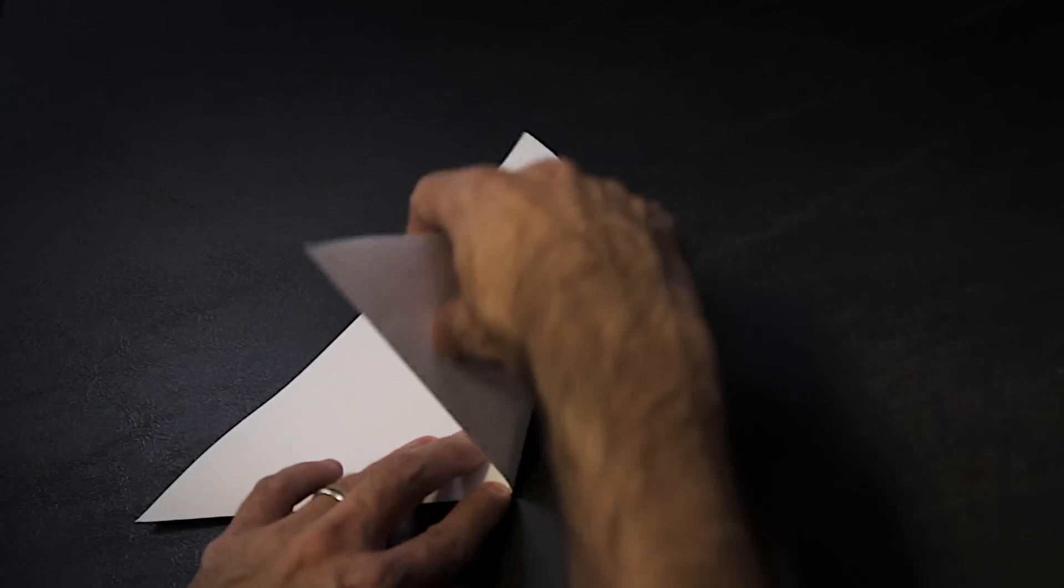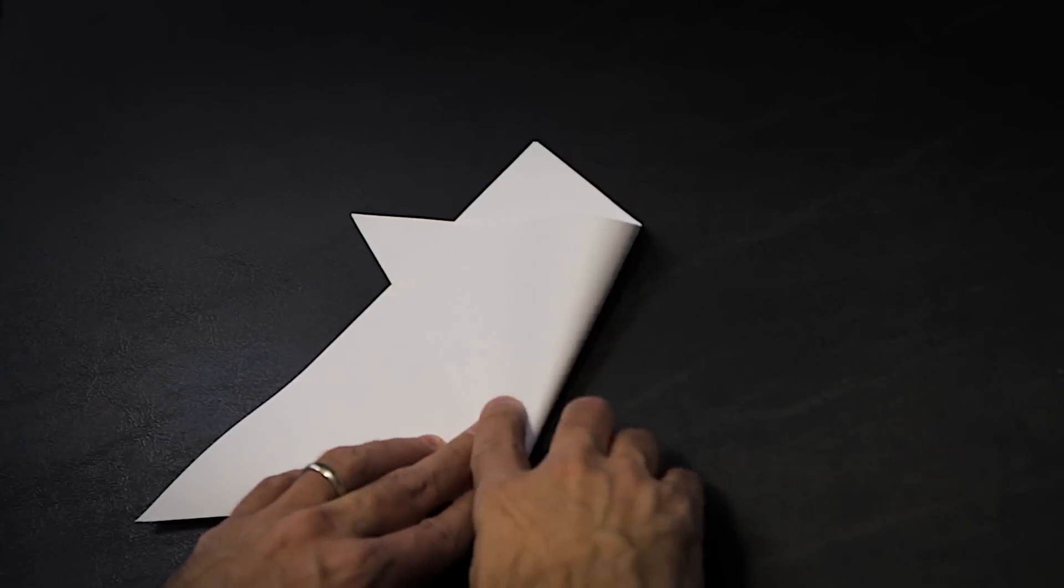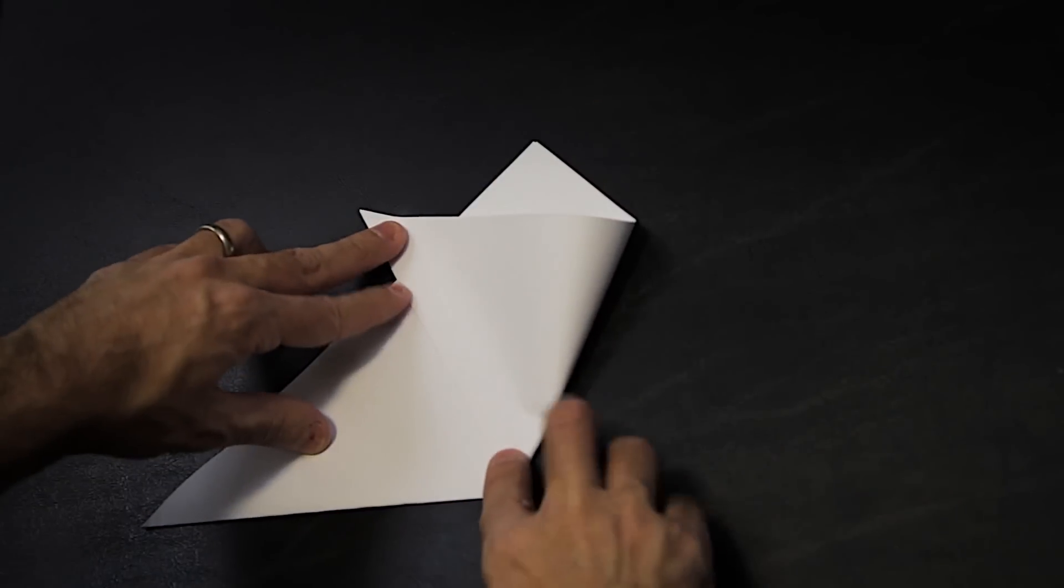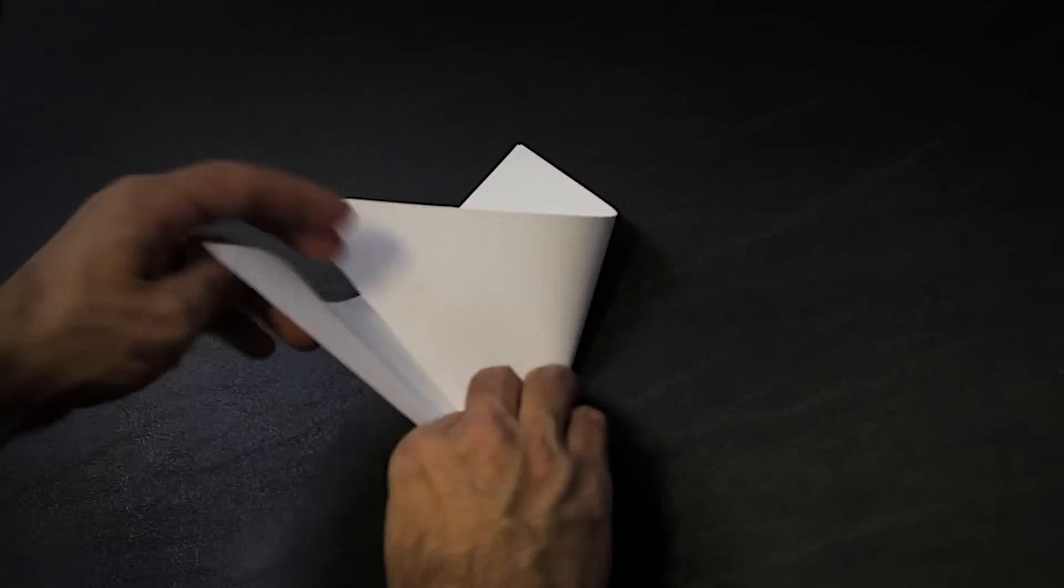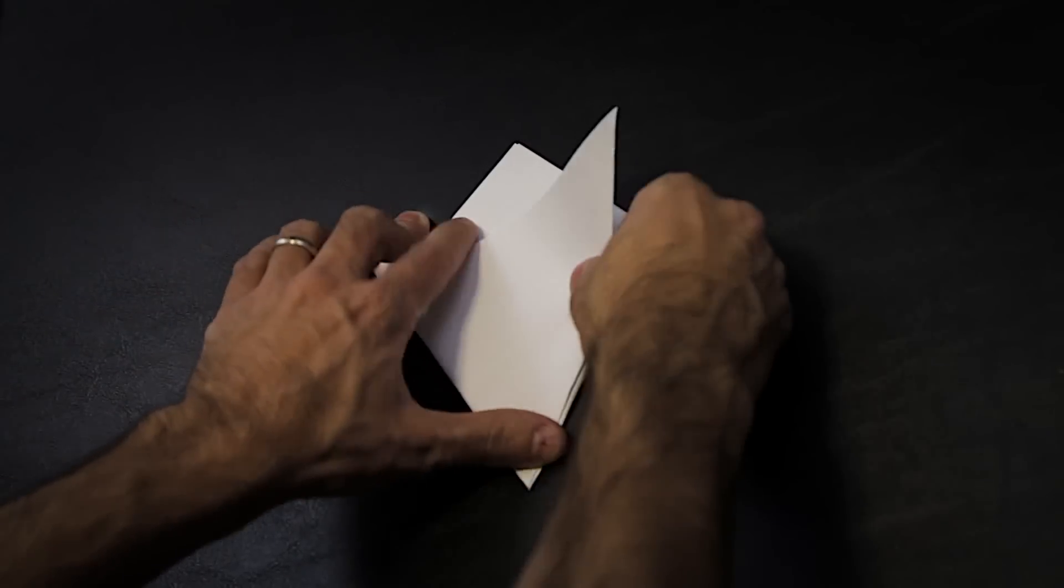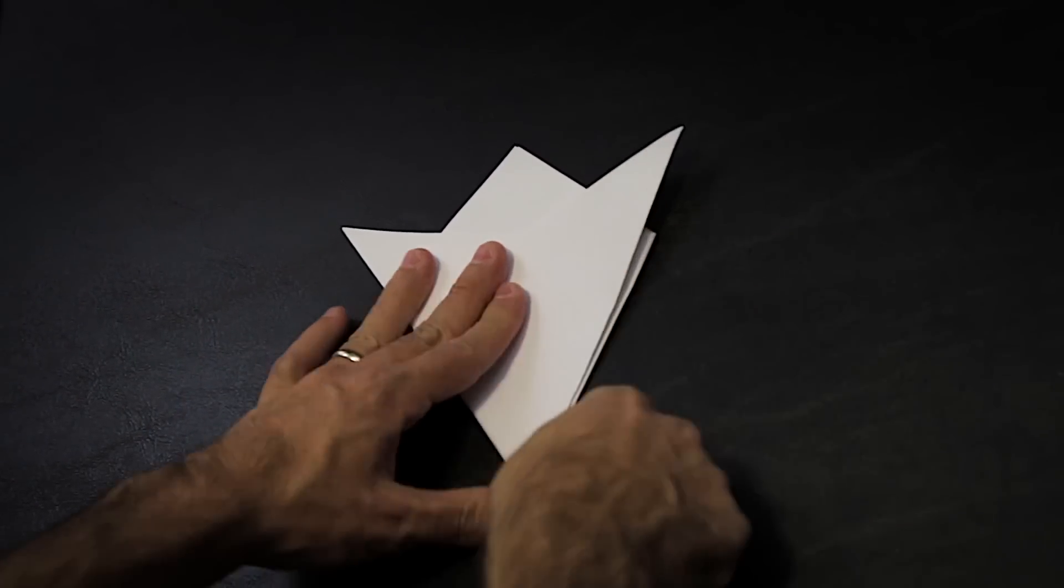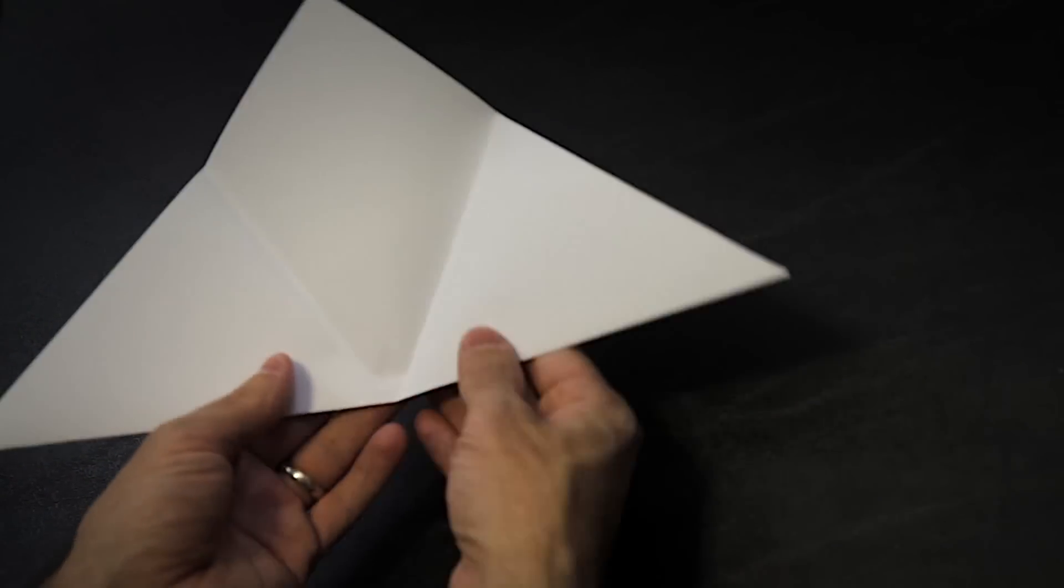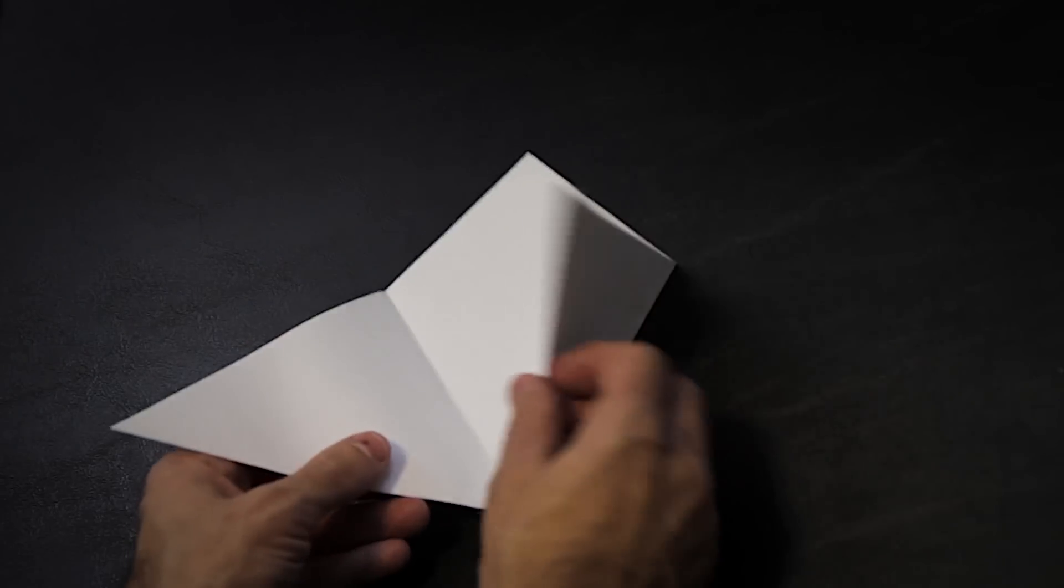So fold the two outer corners up pivoting along the center mark to make three equal segments. Don't worry about getting it perfect the first time. Just get it roughly close and then make the necessary adjustments until each folded segment is the same size.